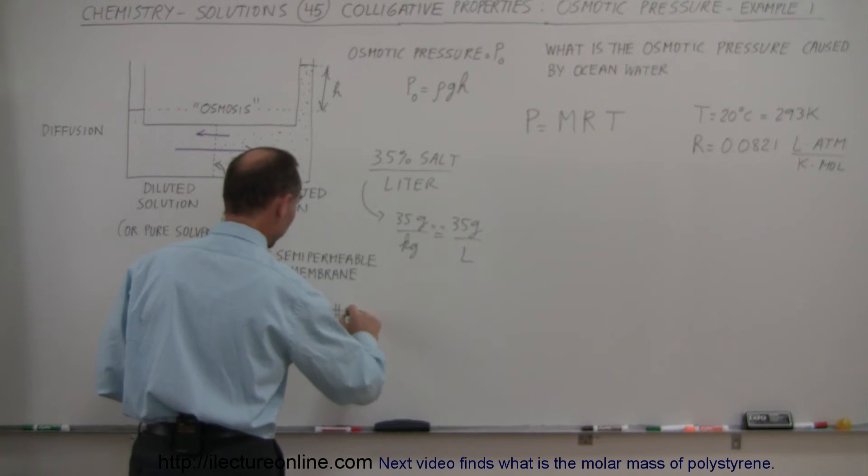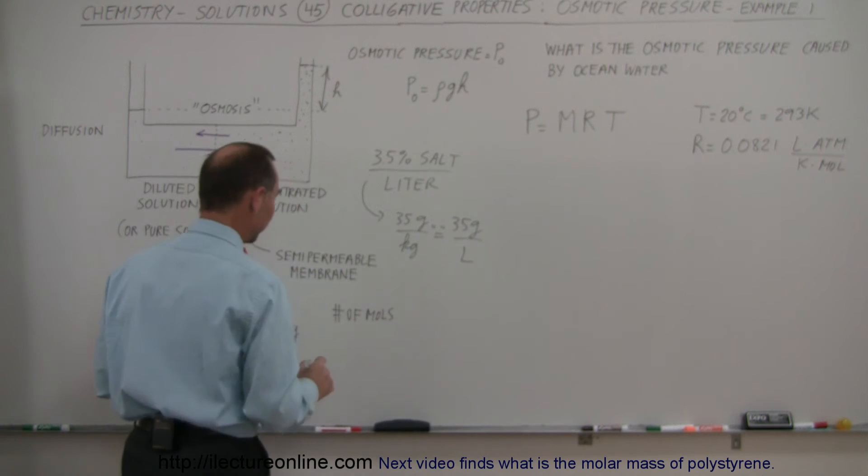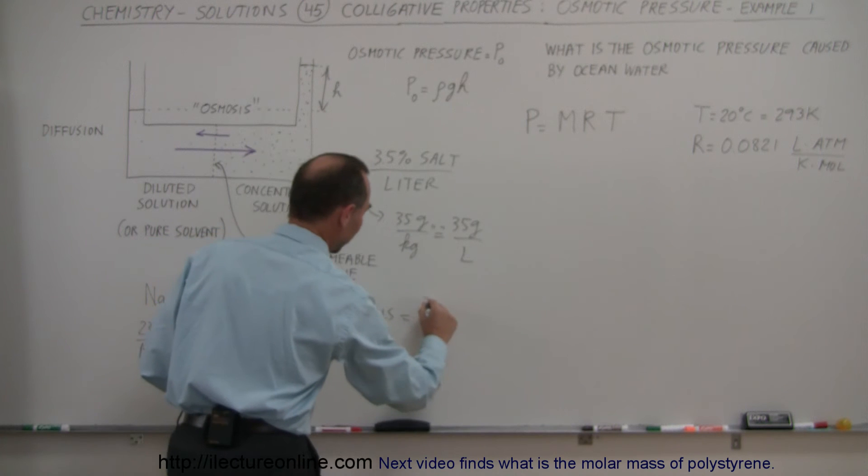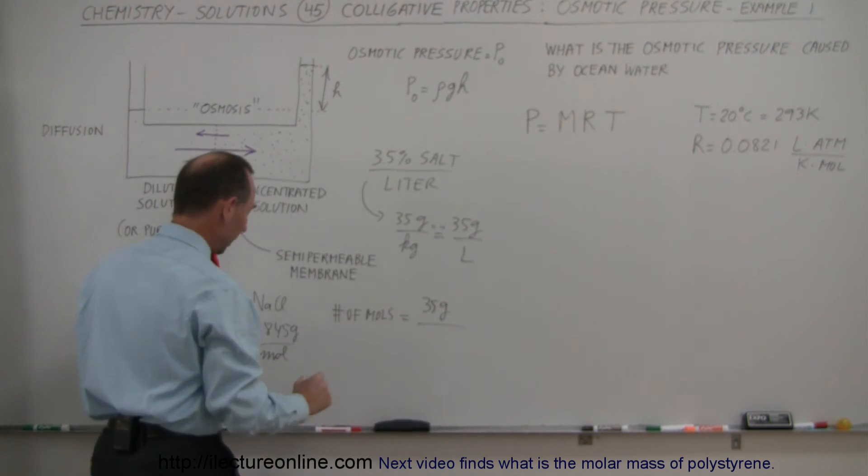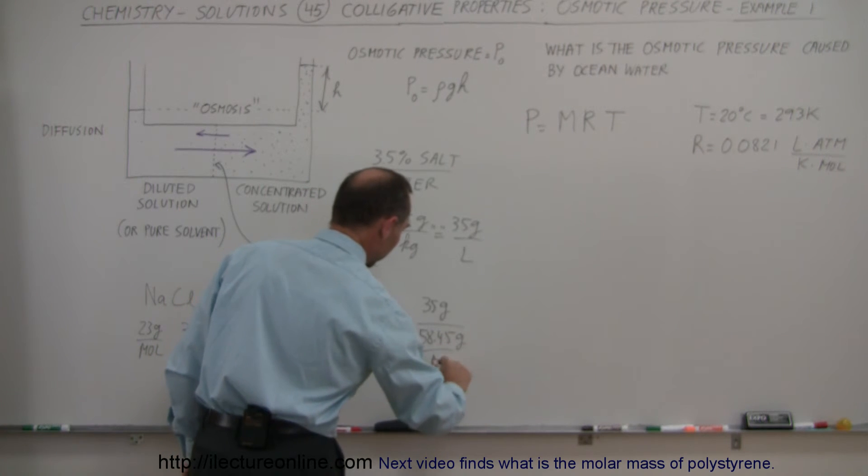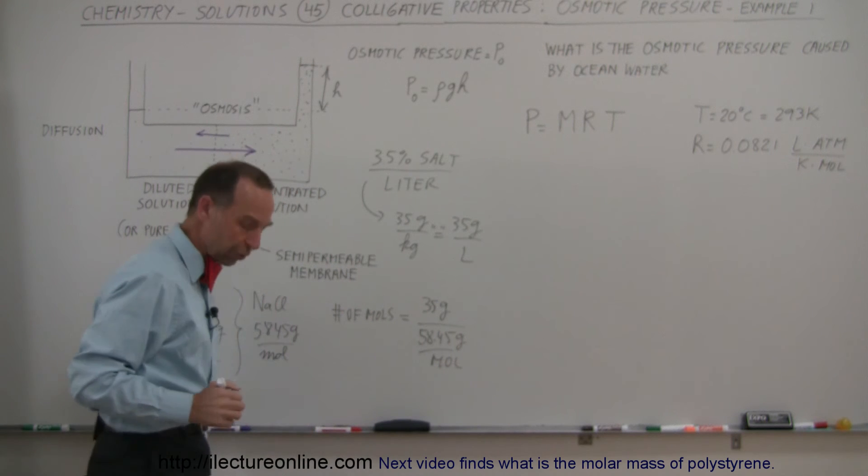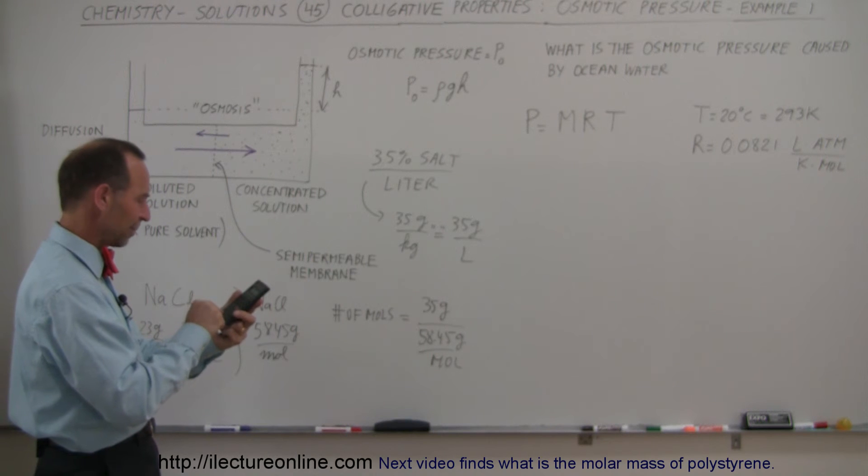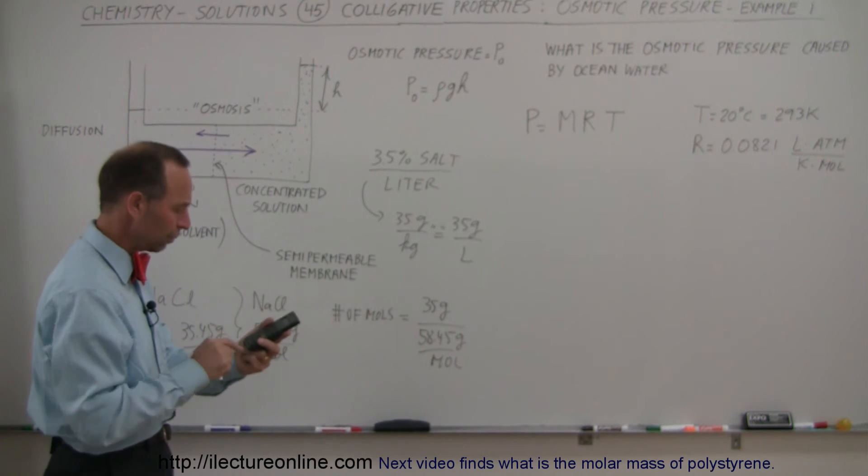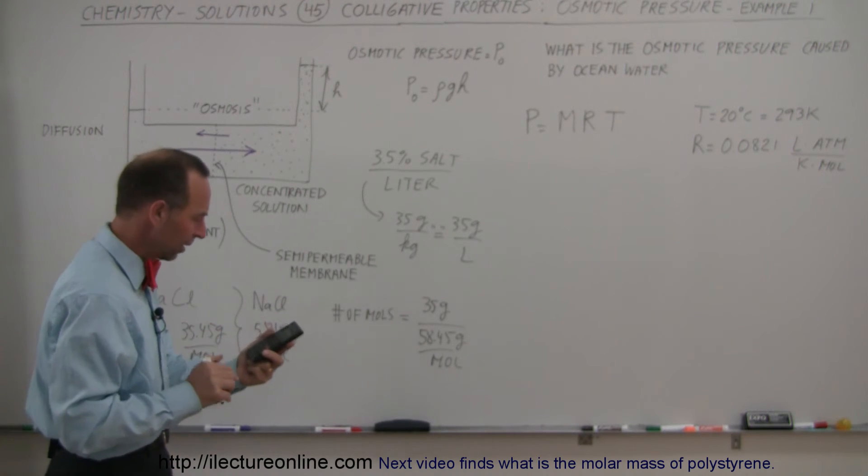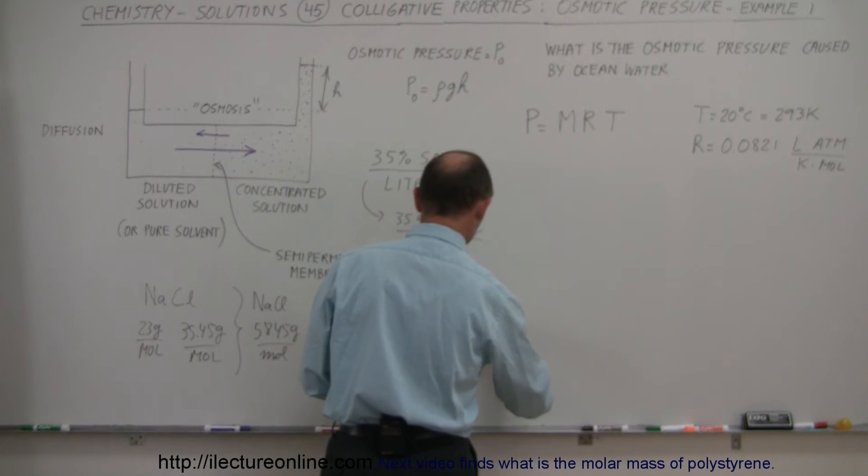So the number of moles of sodium chloride will be equal to the mass that we have here. The mass here is 35 grams divided by the molar mass, which is 58.45 grams per mole. Notice that grams will cancel out, and we're left with moles in the numerator. And then I need a calculator to figure out what that is equal to. 35 divided by 58.45 equals 0.599, 0.599 moles.